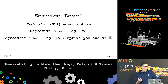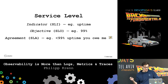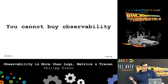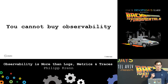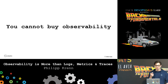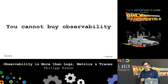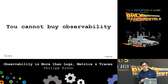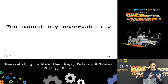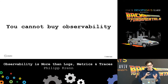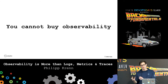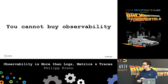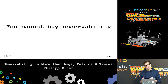You cannot buy observability — you need to build it in and build more observable systems. Observability is not a product that you buy, but an attribute of the system that you want to have. It's not a tool that you buy.